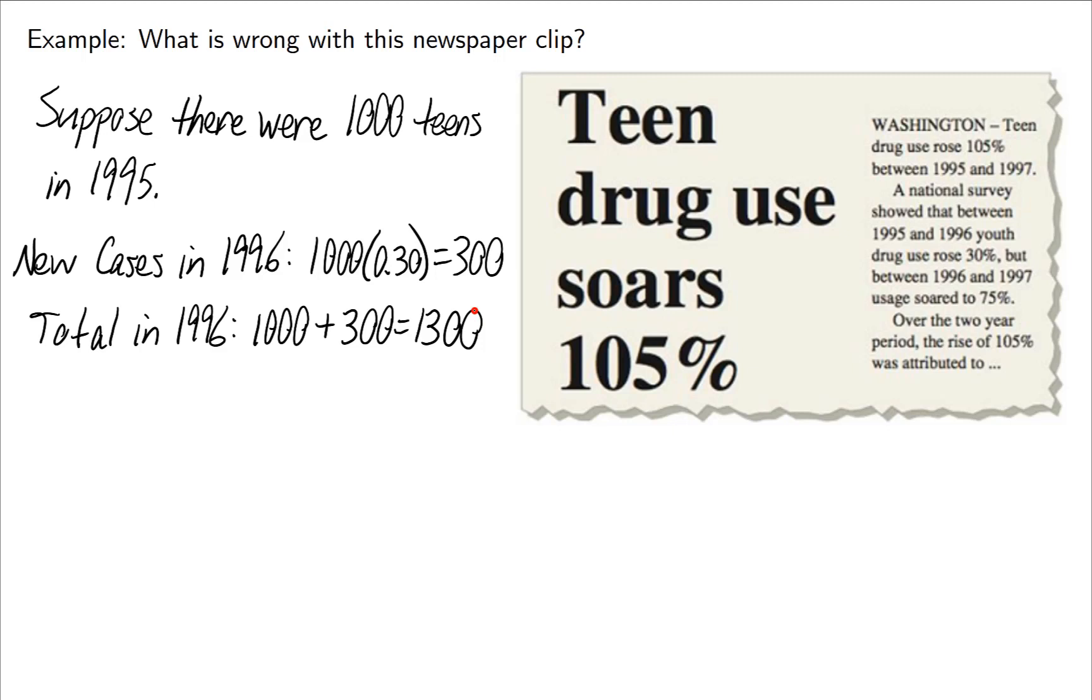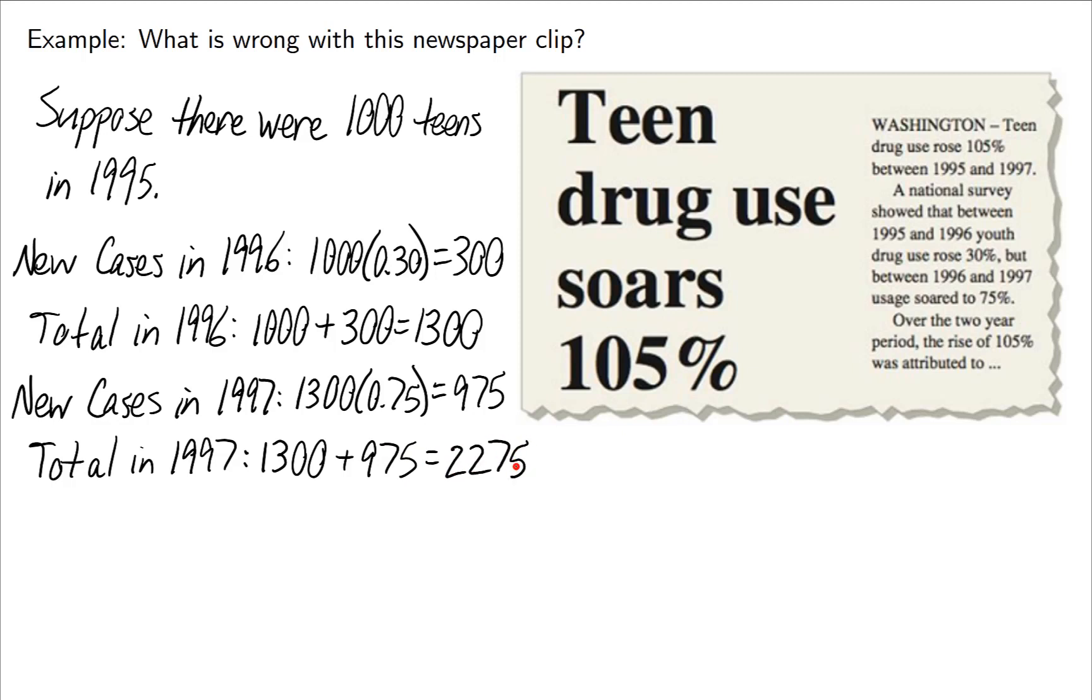That is the total number of teen drug users in 1996, based on our little experiment here. Now let's look what happened from 1996 to 1997, where the usage jumped 75%. In 1997 they started with 1,300 and it rose by 75%, which would be 975 new cases. So then the total in 1997 would be 1,300 plus the 975 new cases, which comes out to be 2,275 in 1997.